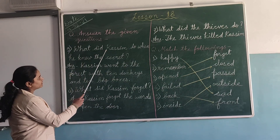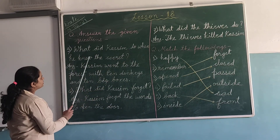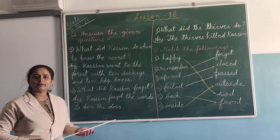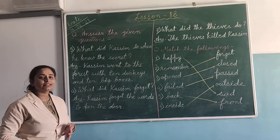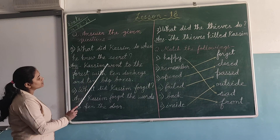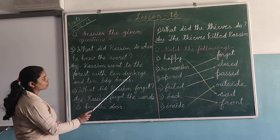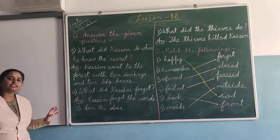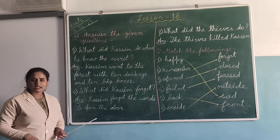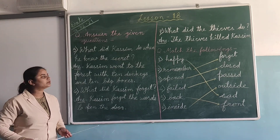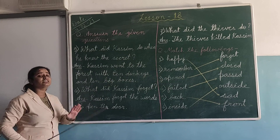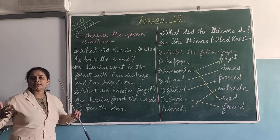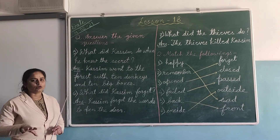Question number 5 is: what did Kasim do when he knew the secret? When Kasim knew the secret, the answer is: Kasim went to the forest with 10 donkeys and 10 big boxes.